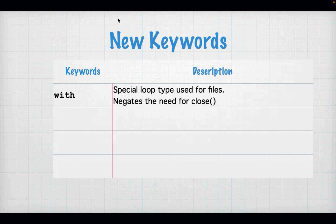We're only going to scratch the surface, but if you get into large files like databases, it is a whole area unto itself in the computer programming IT world. We have a new keyword: `with`. The `with` keyword is a special type of loop that's just used on files, and it does a lot of the cleanup work for you. If you use `with` to do your reading, you won't have to do the cleanup manually.